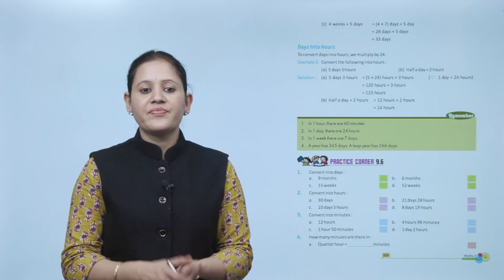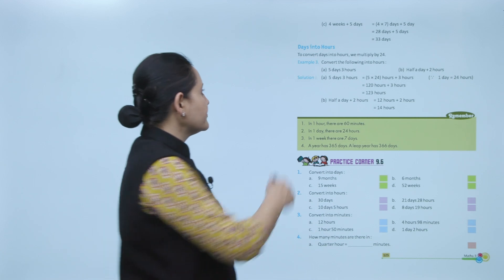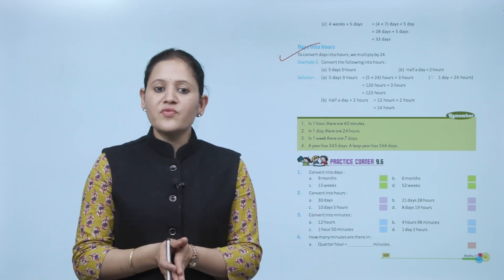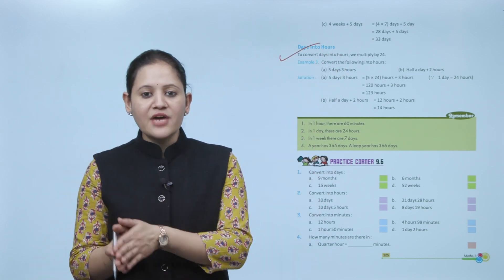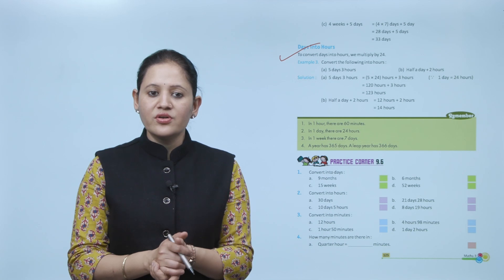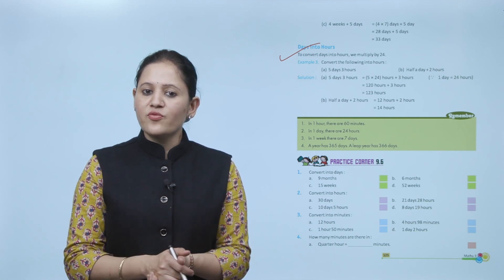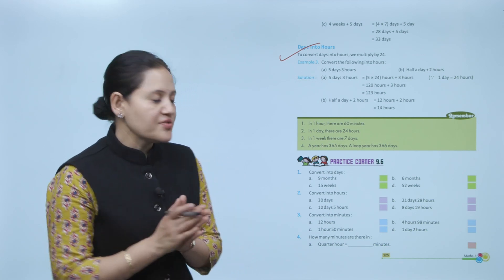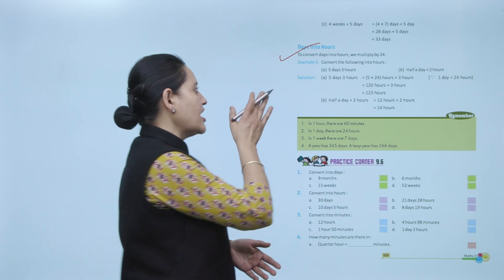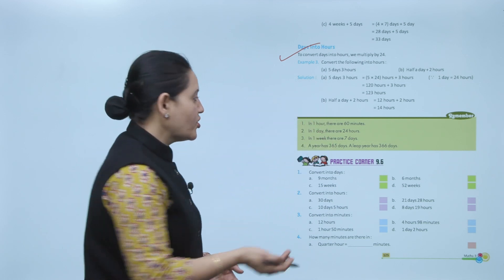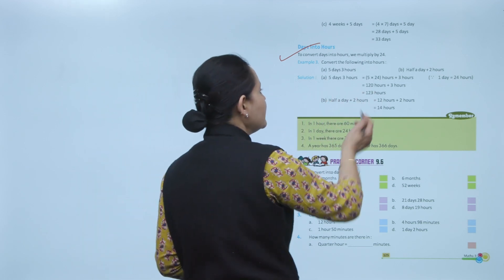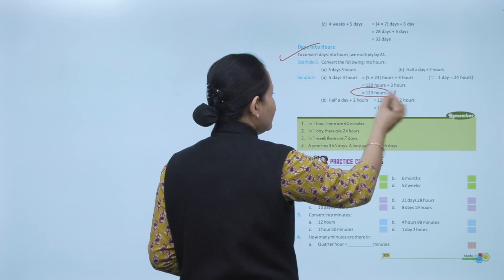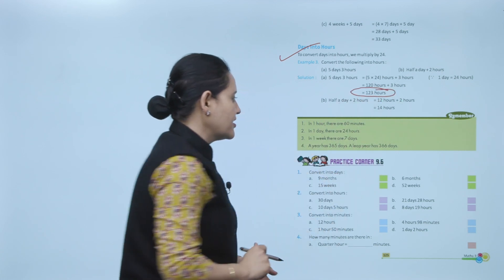Next is Days into Hours. To convert days into hours, we multiply by 24. Example: convert 5 days and 3 hours into hours. 5 × 24 = 120, plus 3 hours = 123 hours.